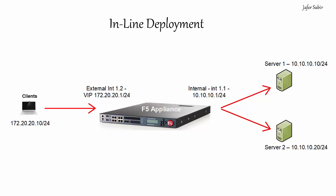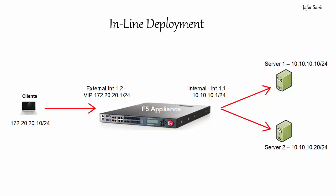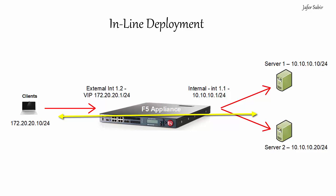As the F5 is a full-blown proxy, it works out which server to send the request to based on the load balancing method in place, and creates a new connection from the F5 to the server — let's say server 1 in this example. The server then gets the connection and responds, and as its default gateway is the F5 appliance, it responds back to the F5, which then responds back to the client.